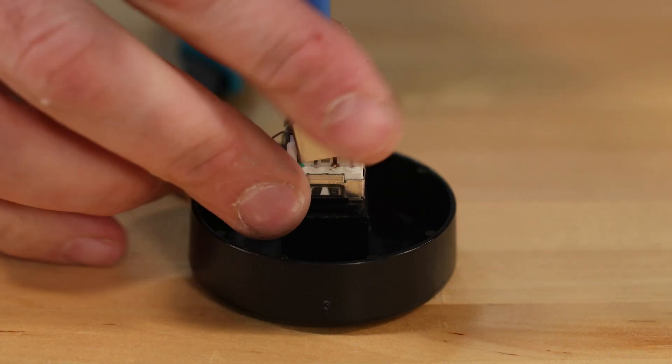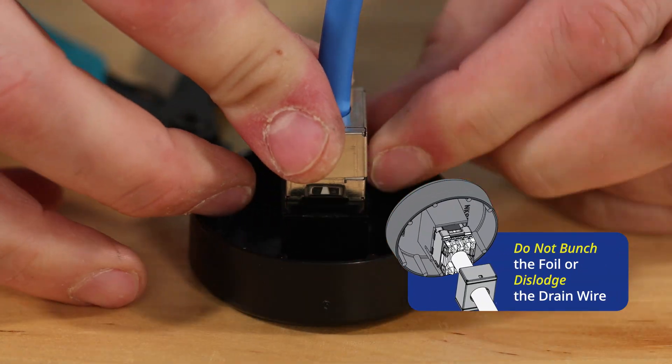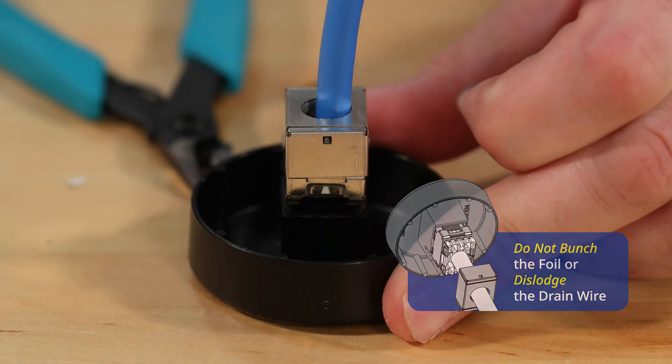Firmly push the wire cap onto the jack housing, making sure that it's fully seated. Do not bunch the foil or dislodge the drain wire when seating the wire cap.